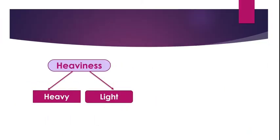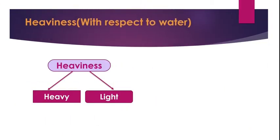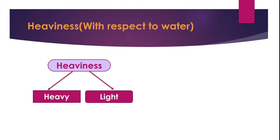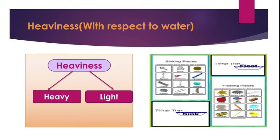Next comes heaviness. Here we are learning about heaviness with respect to water. With respect to water, objects can be classified as either heavy objects or light objects. Heavy objects, as you know, do sink in water, whereas light objects float on water.